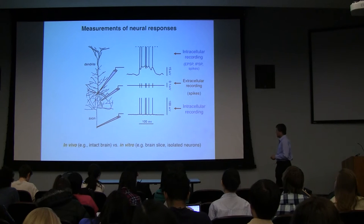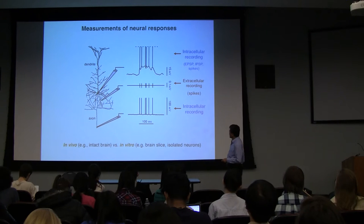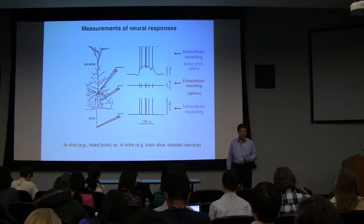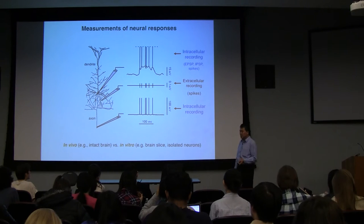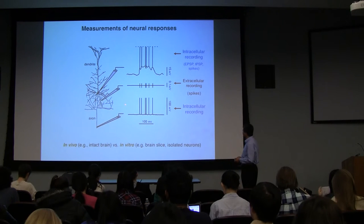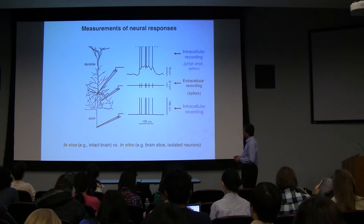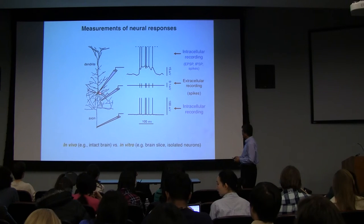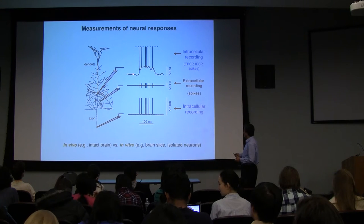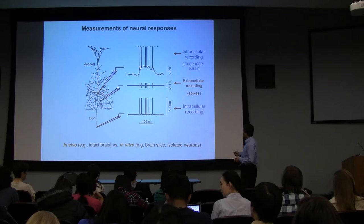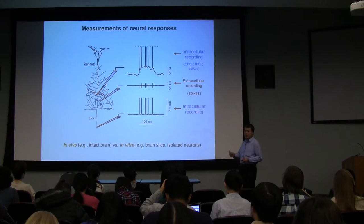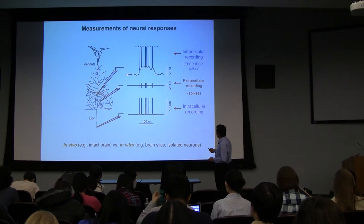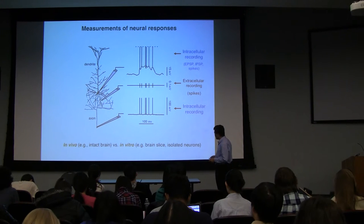We have quite a bit to cover, so I'll try to finish today. Most of you have never seen a single spike experimentally. The experiment we did last week with the frog nerve was a compound action potential. If you get a chance to record real single action potentials, the most common way is to use a microelectrode inserted into the soma body. You get a transmembrane potential signal, and when it rises past threshold, you have an action potential. This kind of recording is called intracellular recording, and you can record both membrane potential — EPSP, IPSP — and a spike.